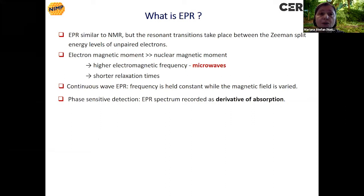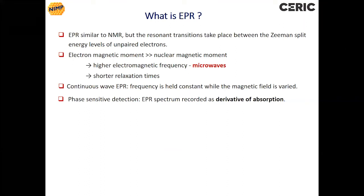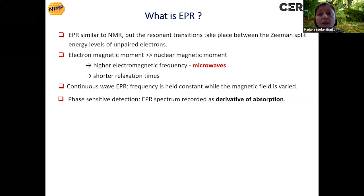EPR is similar to NMR, but the resonant transitions take place between the energy levels of the unpaired electrons. As the magnetic moment of the electron is much larger than the nuclear magnetic moment, there are some specific differences such as higher electromagnetic frequencies — so EPR works in the microwave region — and shorter relaxation times of the electron spins. Also in the instrumentation, for continuous wave EPR, the frequency is held constant while the magnetic field is varied, and as it uses phase-sensitive detection, the EPR spectrum is recorded as the derivative of absorption.